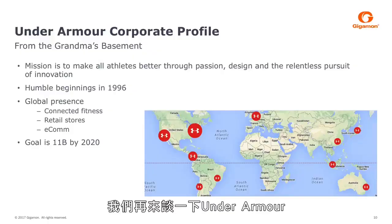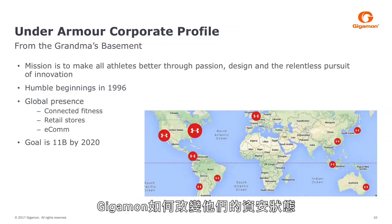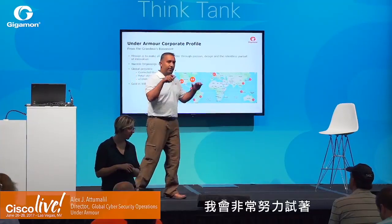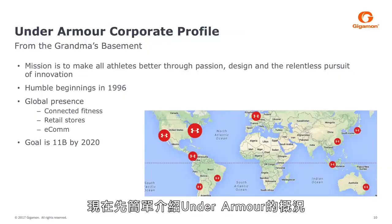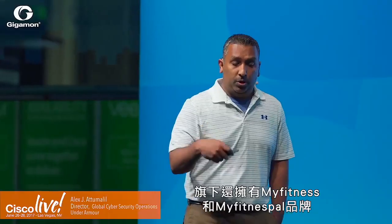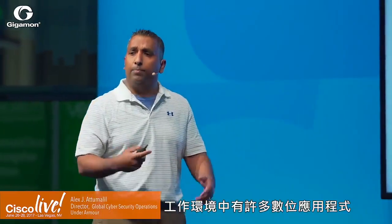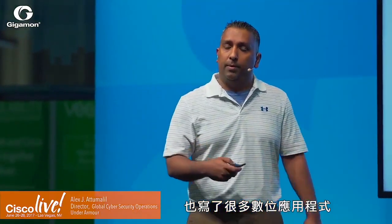Let's talk about Under Armour, because here we have a specific use case from one of our customers. Alex is going to detail how Gigamon has changed their security posture. Under Armour is a 20-year organization, well known for shirts and shoes. They also own MapMyFitness and MyFitnessPal — a lot of digital app-type environment with many digital applications being produced.